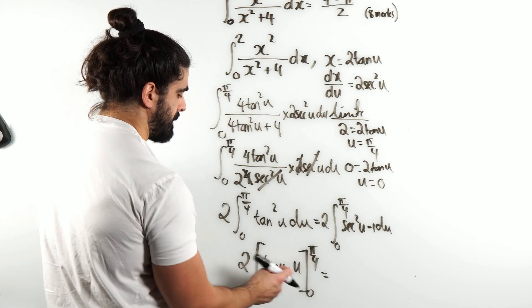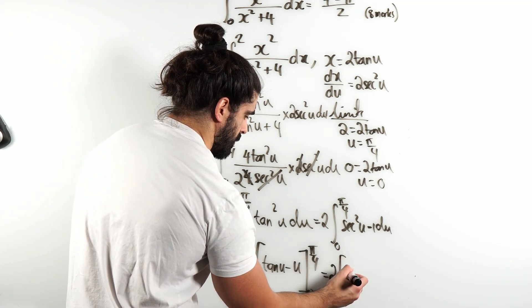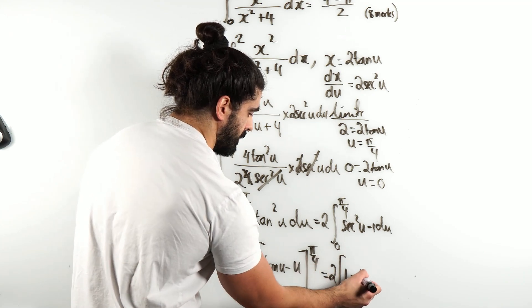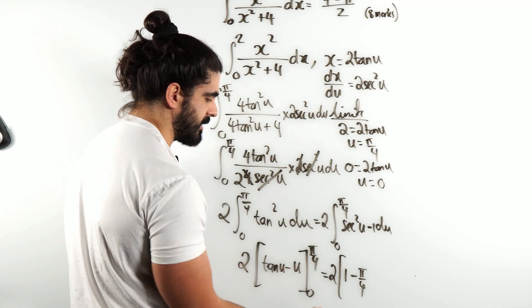Okay, subbing in π/4, tan(π/4) = 1. So we have 2 times (1 - π/4). Then when you sub in 0, all of these terms just become 0.